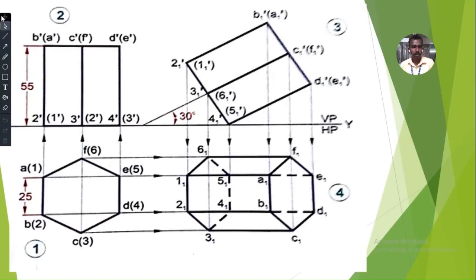Add notations: a1, a(1), b(2), c(3), d(4), e(5) for the vertices. Here 1-dash, 2-dash, 3-dash, 4-dash, 5-dash are the hidden lines, and 6-dash here. Then a1, a, b, b1, c — likewise give all the notations: 2-dash, 1-dash, b-dash, a-dash. Refer to the drawing and give all notations accordingly.